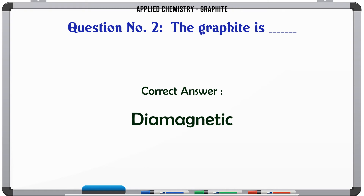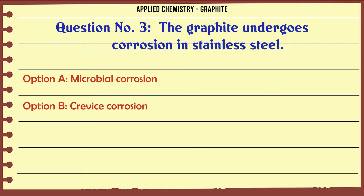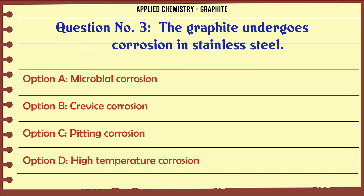The graphite undergoes corrosion in stainless steel. A. Microbial corrosion. B. Crevice corrosion. C. Pitting corrosion. D. High temperature corrosion.